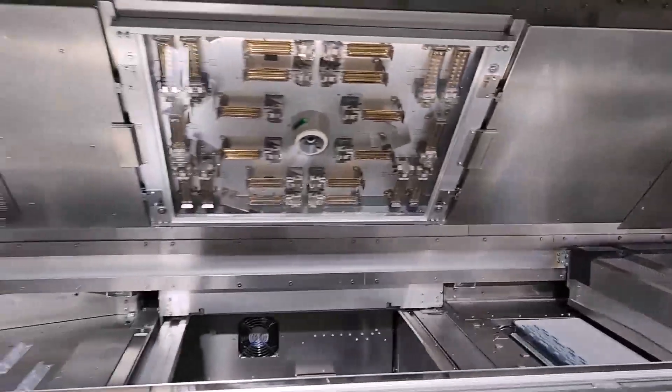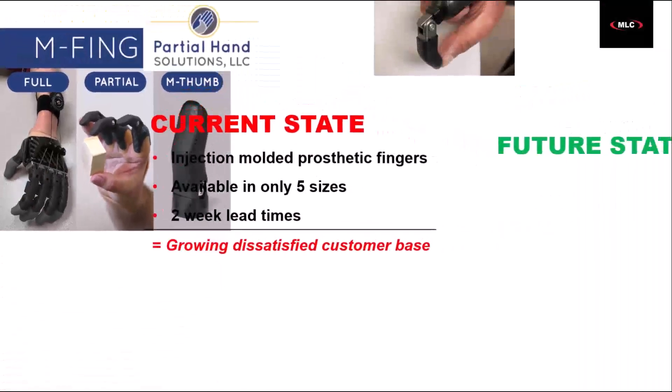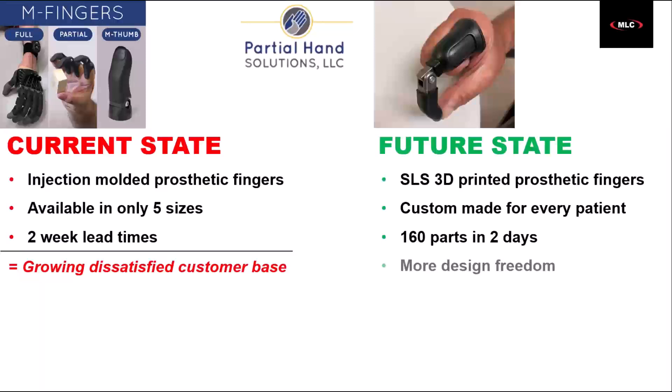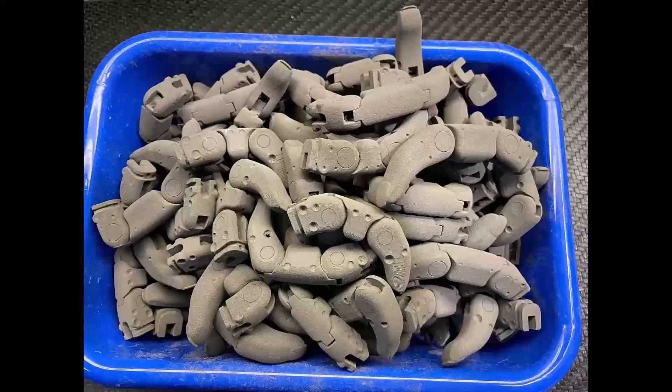The Fuse One Plus, however, has lowered the barrier to entry into SLS, so Partial Hand Solutions bought one. With the help of their new printer, the fingers are now more affordable, allow for greater design freedom, are much faster to make at 160 parts in two days, and equally as durable as before. Plus, they can print the joints in place, an ability wholly unique to 3D printing, and one that ultimately simplified the assembly process.